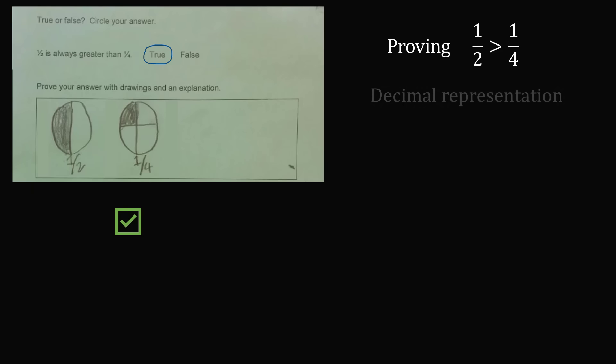Another method is to use the decimal representation. 1 half is equal to 5 parts out of 10, which can be represented as 0.5. 1 over 4 can be represented as 25 over 100, which is equal to 0.25. Now we look at the first number after the decimal point, and we have 5 versus 2. 5 is greater than 2. So, of course, 1 half is greater than 1 fourth.